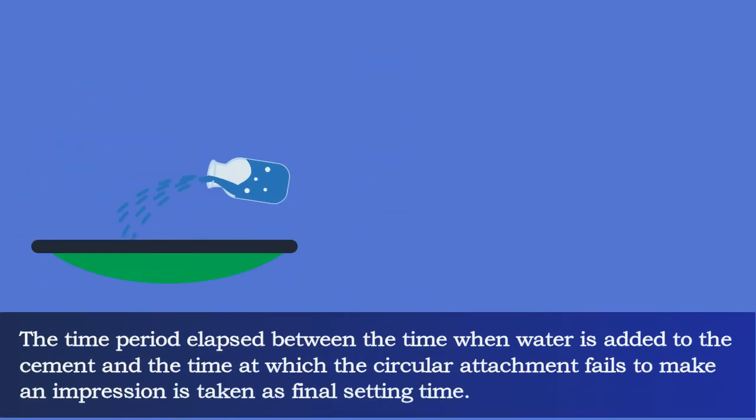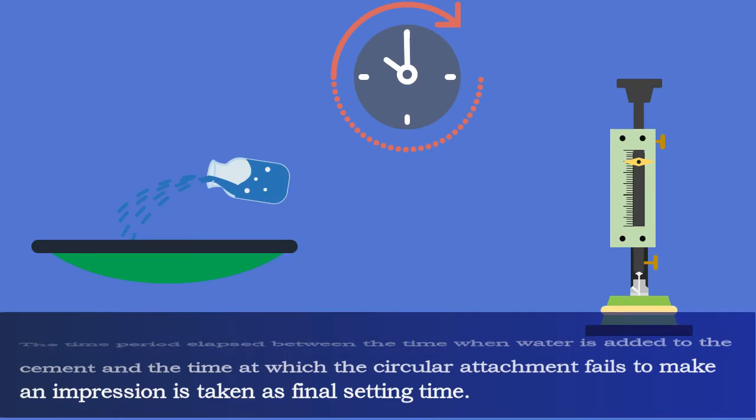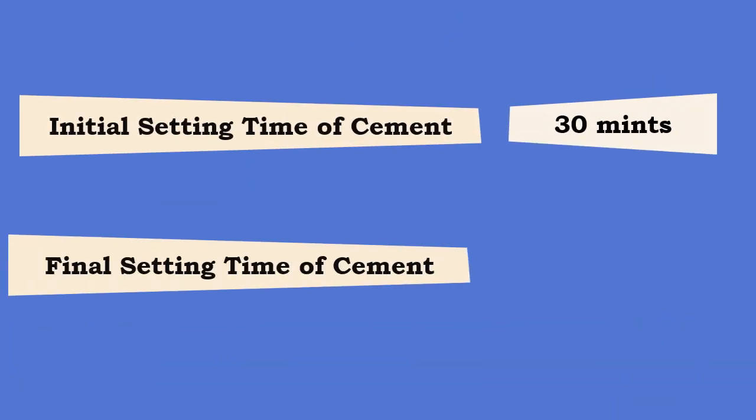The time period elapsed between when water is added to the cement and when the circular attachment fails to make an impression is taken as final setting time. The results of initial and final setting time should be reported to the nearest 5 minutes.